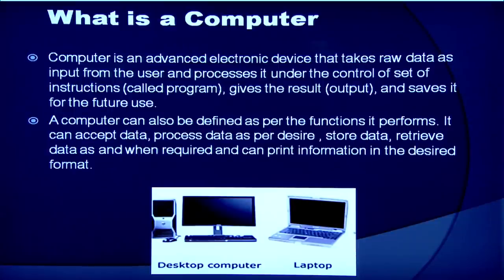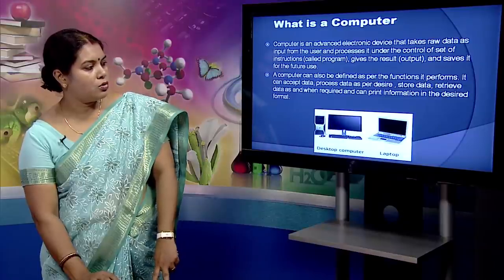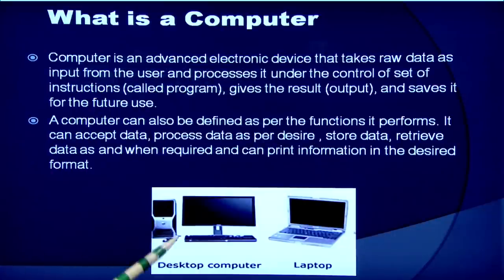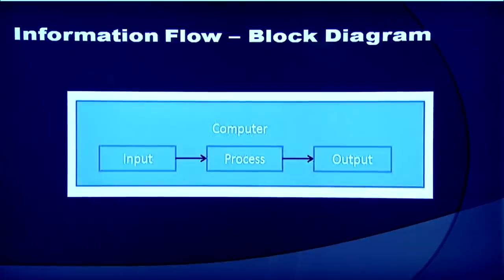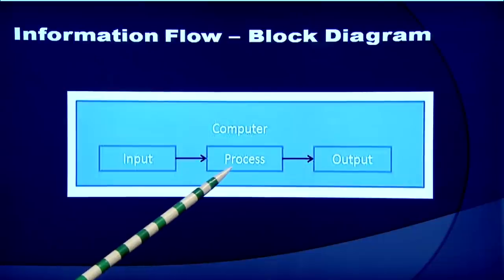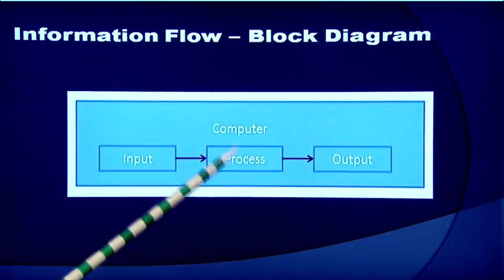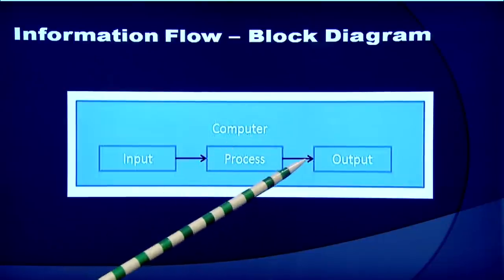A computer can accept data, store data, process data as desired and retrieve the stored data as and when required and print the result in the desired form. You can see two computers, a desktop computer and a laptop on the screen. This slide shows how an input is being processed by the computer and then it is converted to an output.